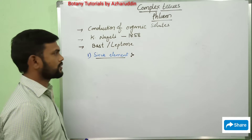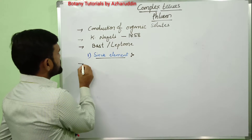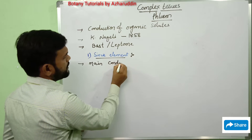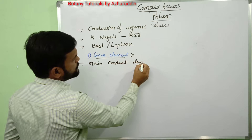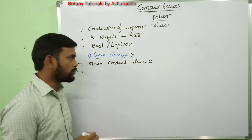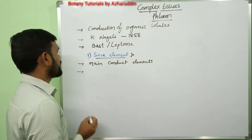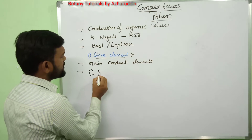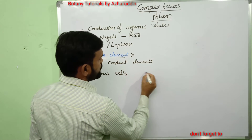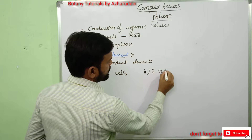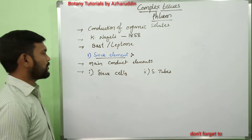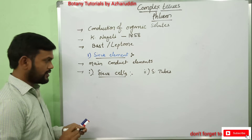Coming to sieve elements — these are the chief conducting elements. They are the main conducting elements; they conduct food from leaves to different parts of the plant body. Sieve elements are divided into two types based on specialization: number one, sieve cells, and the second type, sieve tubes.